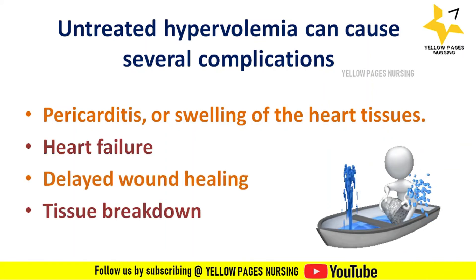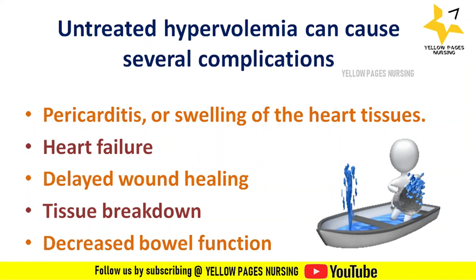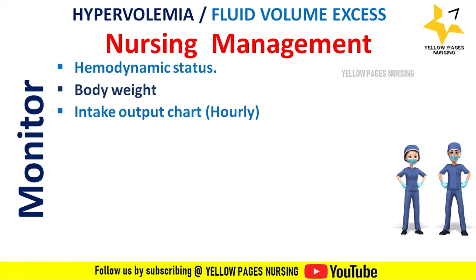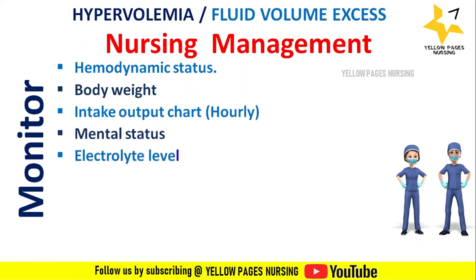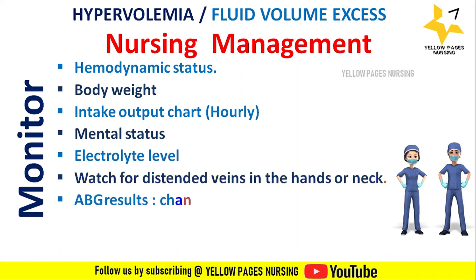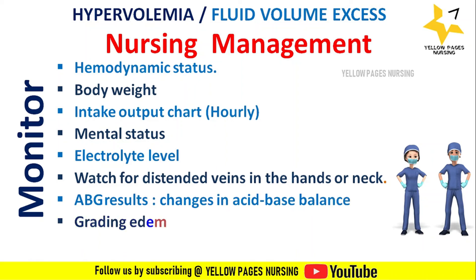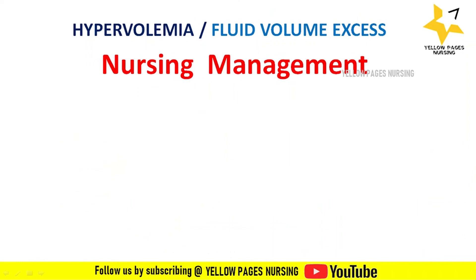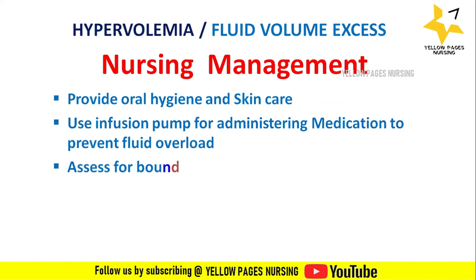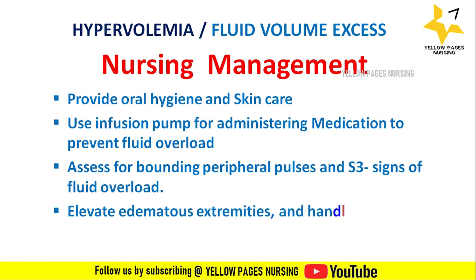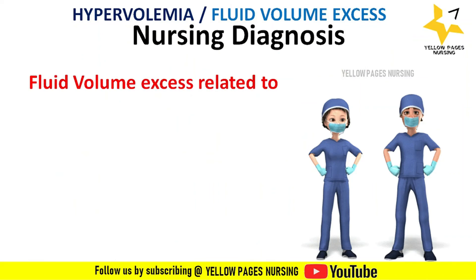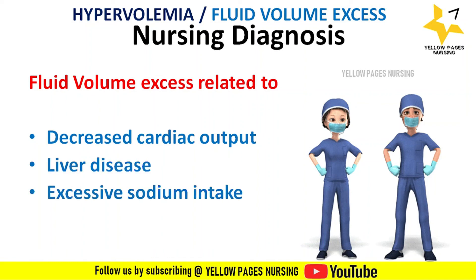Nursing management of hypervolemia: monitor hemodynamic status, check body weight, monitor intake/output chart hourly, check mental status, monitor electrolyte levels, watch for distended veins, monitor ABG results for acid-base changes, grade edema, and measure abdominal girth in ascites. Provide oral hygiene and skin care, use an infusion pump to prevent fluid overload, assess for bounding peripheral pulse and S3 sounds, elevate edematous extremities, and use anti-embolic stockings as ordered. Nursing diagnosis: fluid volume excess related to decreased cardiac output, liver disease, excessive sodium intake, or renal insufficiency.